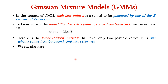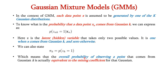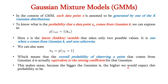We can also state that pi_k equals P(z_k=1), meaning the overall probability of observing a point from Gaussian k is equivalent to its mixing coefficient. This makes sense because pi_k indicates how large or small the Gaussian is — the bigger the Gaussian, the higher we would expect this probability to be.